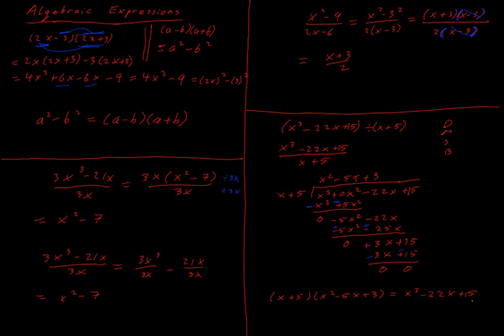It also means x² minus 5x plus 3 is a factor. Multiplying these two factors together must return the original expression. A useful pattern to note: the first term of the first bracket multiplied by the first term of the second bracket gives the first term of the final answer, and the last term times the last term gives the last term of the final answer.